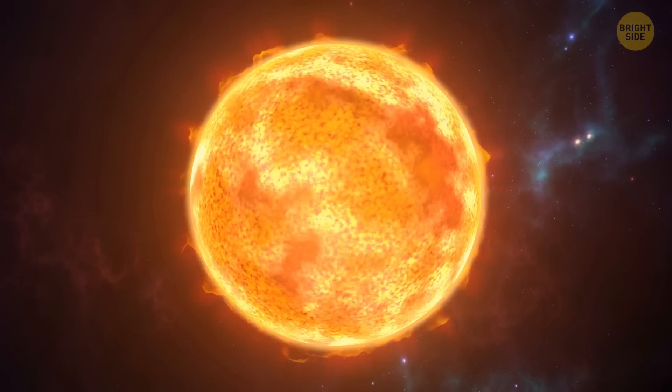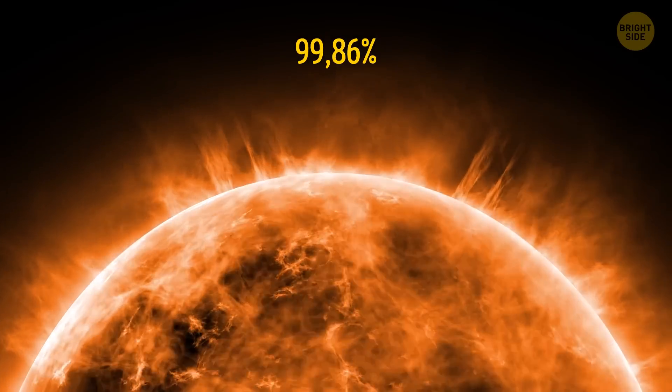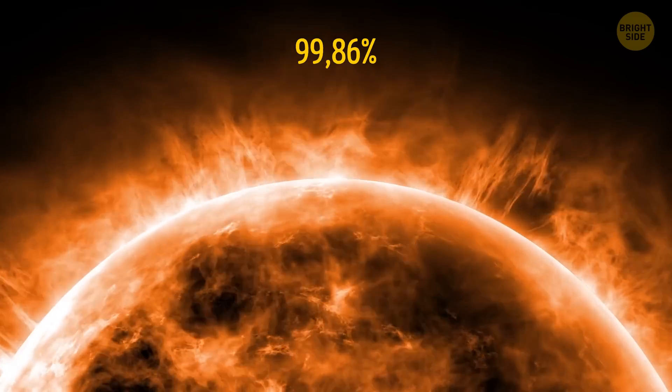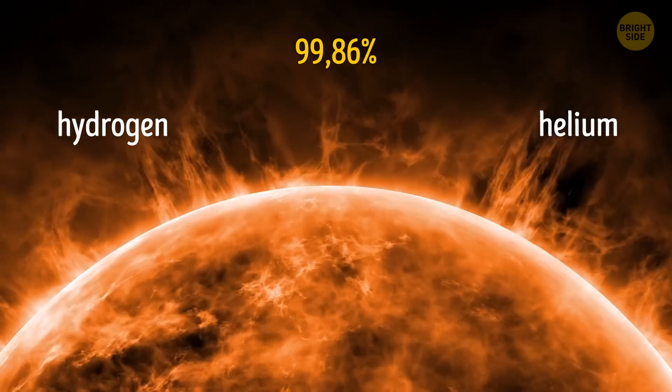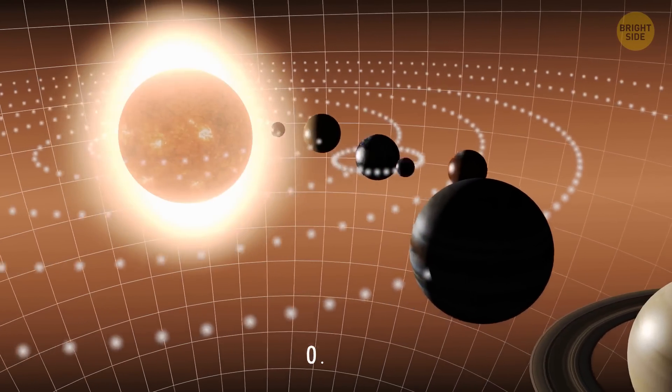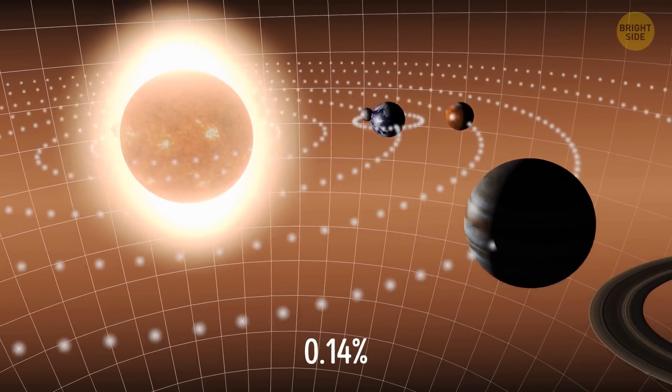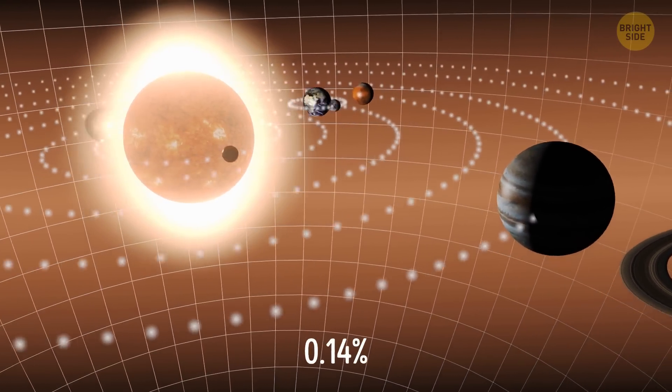Our Sun is insanely massive. Want some proof? Well, 99.86% of all the mass in the Solar System is in the mass of the Sun, in particular the hydrogen and helium it's made of. The remaining 0.14% is mostly the mass of the Solar System's 8 planets.